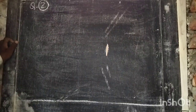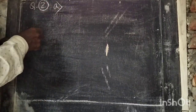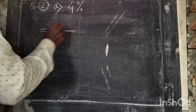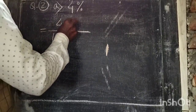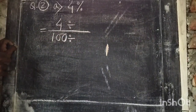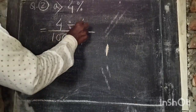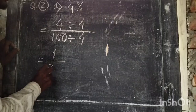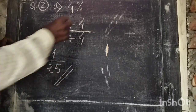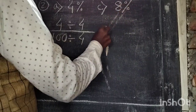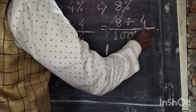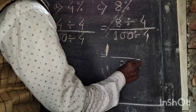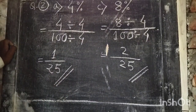Question 2: Convert the following percentages to fractions and reduce them to their simplest form. Part A: 4 percent — write as 4 by 100. Dividing numerator and denominator by 4, we get 1 by 25. Part B: 8 percent — write as 8 by 100. Dividing by 4, the simplest form is 2 by 25.